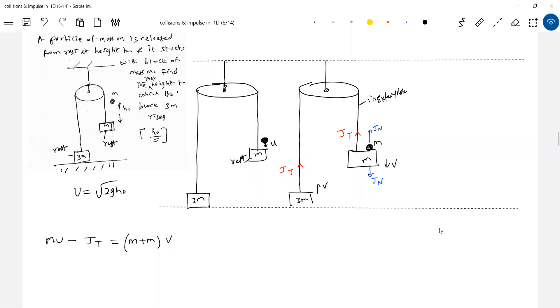For block 3M, 0 plus JT equals 3MV. Add up this to MU equals 4MV. So now what will happen to this particular block 3M? It starts rising up because it acquired velocity V. The moment it loses contact from the ground, 3MG weight will act here.